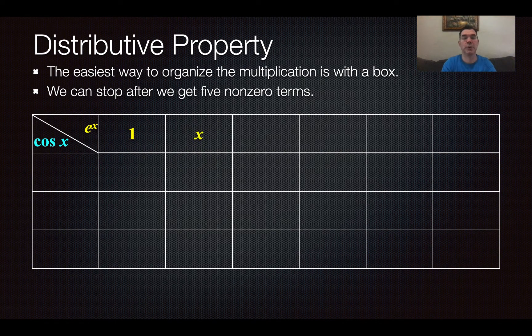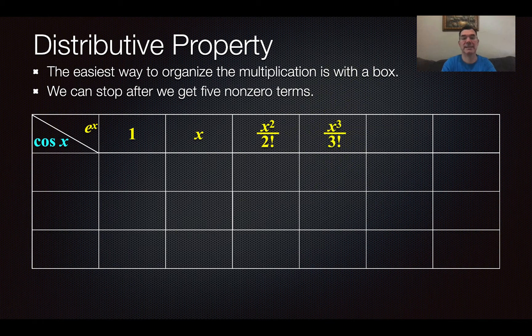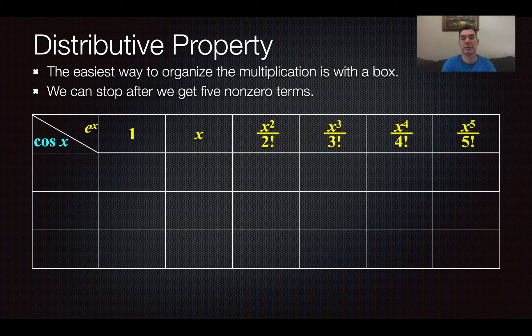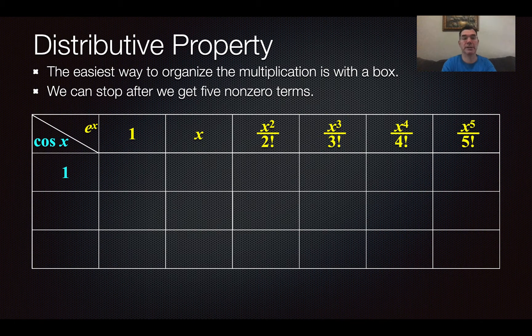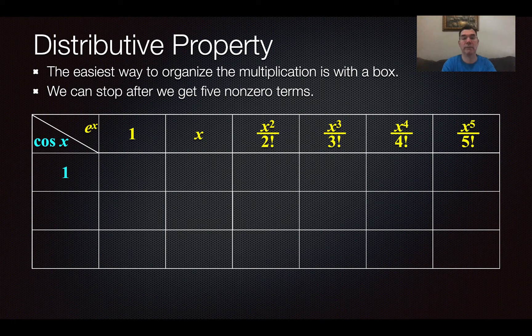All right, so I'm just putting my terms of e to the x in that top row, just to remind myself. And so the first term in the Maclaurin series for cosine x is 1. So I'm going to take 1 and multiply it by all of those yellow terms, which is not hard. I'm basically just copying those,